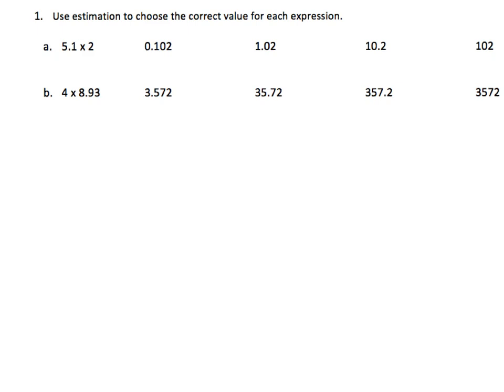A asks us to multiply 5 and 1 tenths times 2, and we need to determine if the answer would be 1 hundred and 2 thousandths, 1 and 2 hundredths, 10 and 2 tenths, or 102.